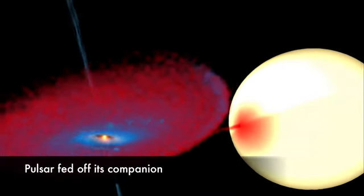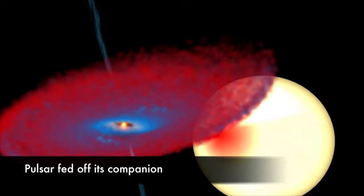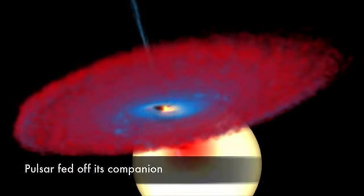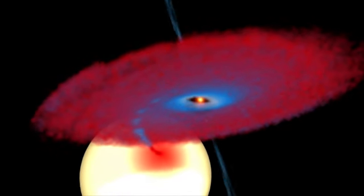The rapid spin of the pulsar tells us that the system once possessed a massive accretion disk as the pulsar stripped matter from its stellar companion. The leftover of this star is what we see today as the planet.